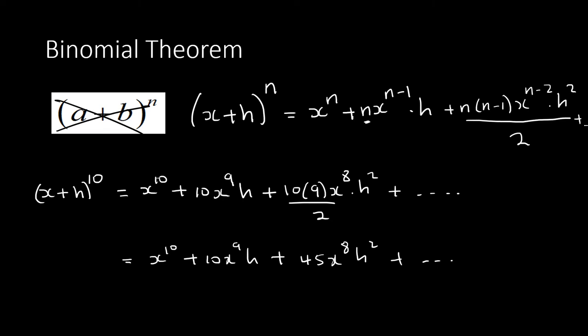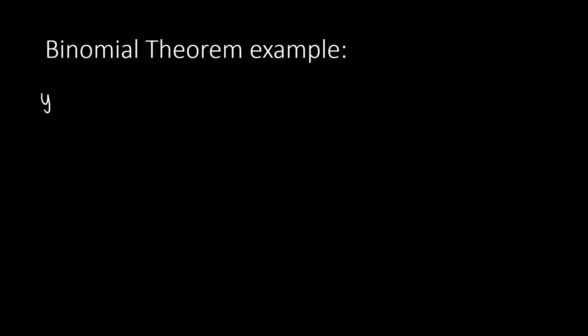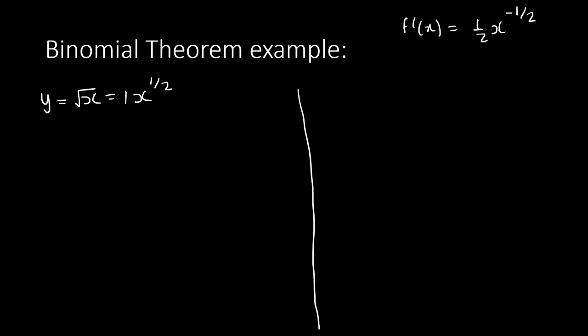I'll show you why you need binomial theorem. When we did y = x² it was easy to do first principle. Now if they give you y = √x, we know √x = x^(1/2). We already know the answer: dy/dx = ½x^(−1/2). You multiply ½ by 1 to get ½, then subtract 1 from the exponent to get −½.